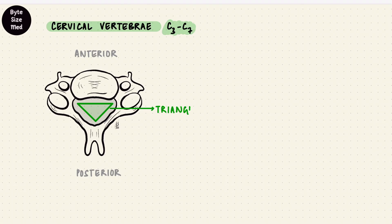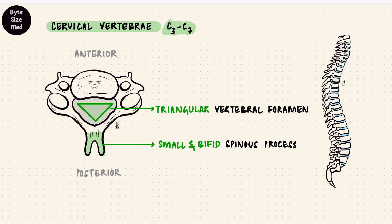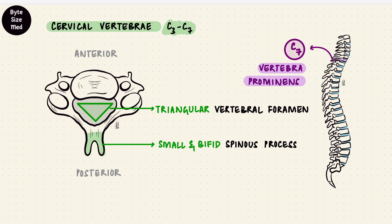The vertebral foramen looks like a triangle. The arch is also small. The spinous process is small too and it can be bifid, meaning it can be split at the end. Of the cervical vertebrae, the one with the most prominent spinous process is C7, closest to the thoracic vertebrae. That gives it a special name: vertebra prominens, because of its prominent spinous process.